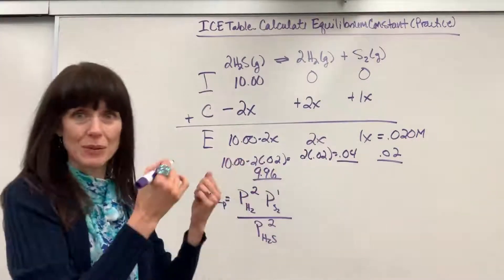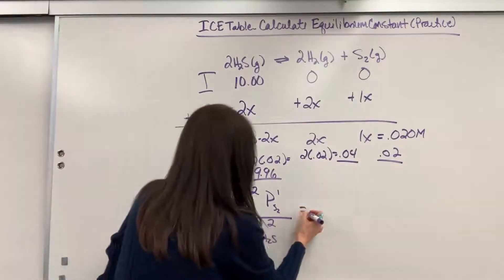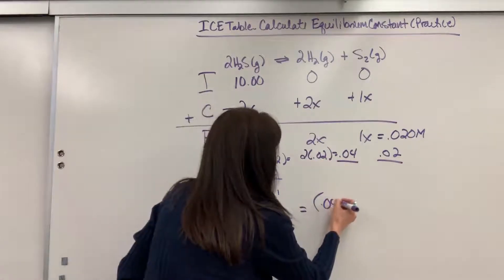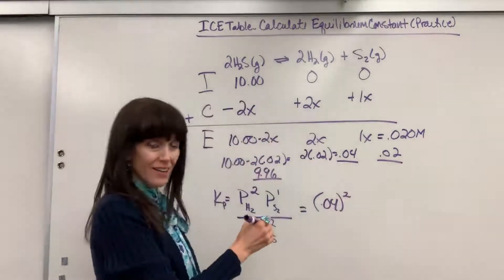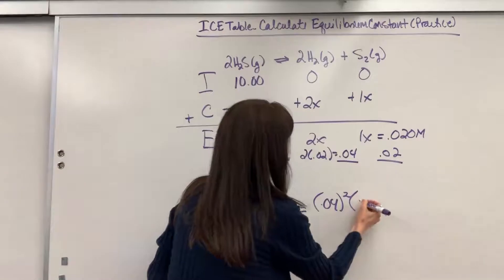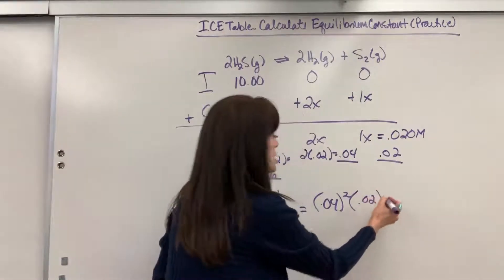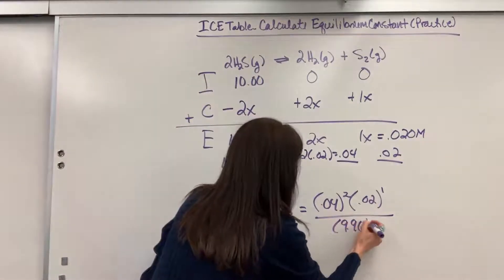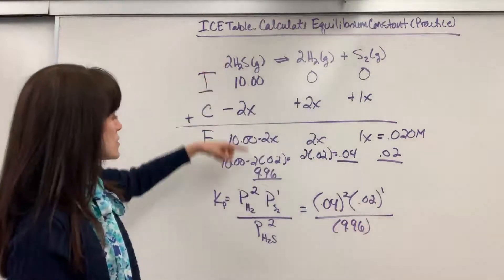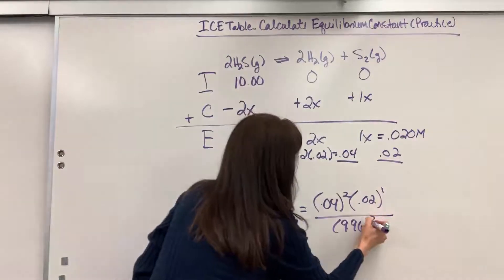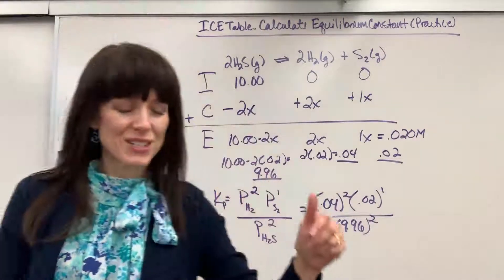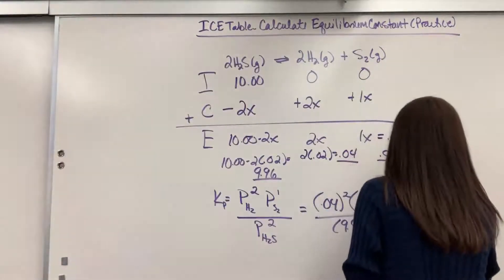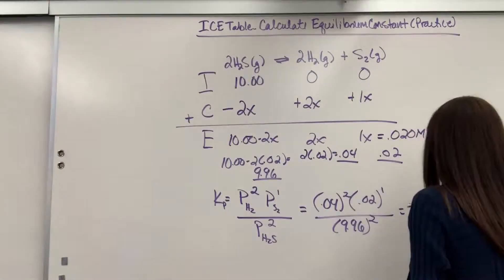Now I can take these numbers and plug everything in. So this will be 3.2 times 10 to the minus 7.